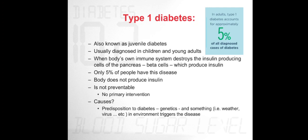The causes of Type 1 diabetes include a predisposition from genetic factors as well as external factors such as weather and viral infections.